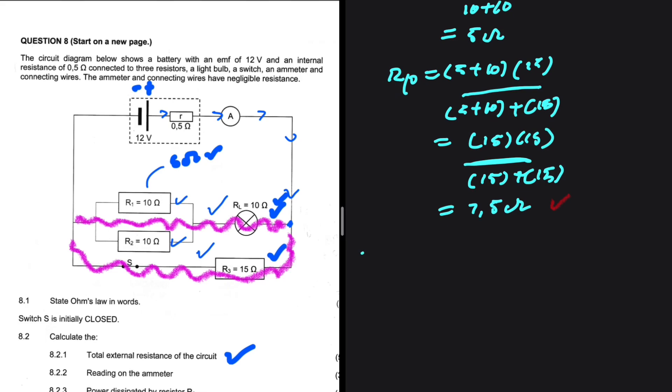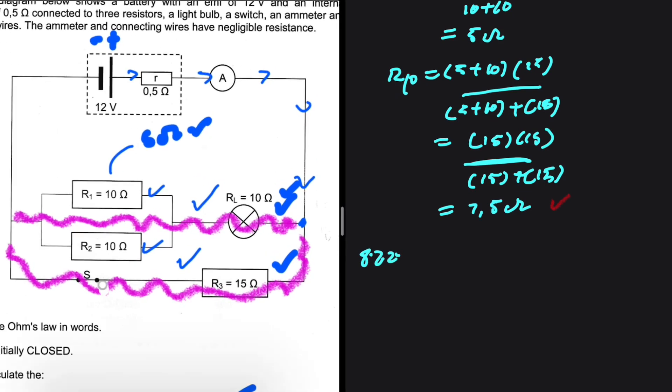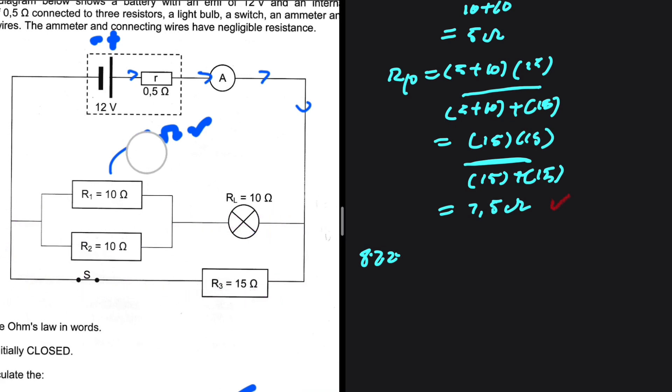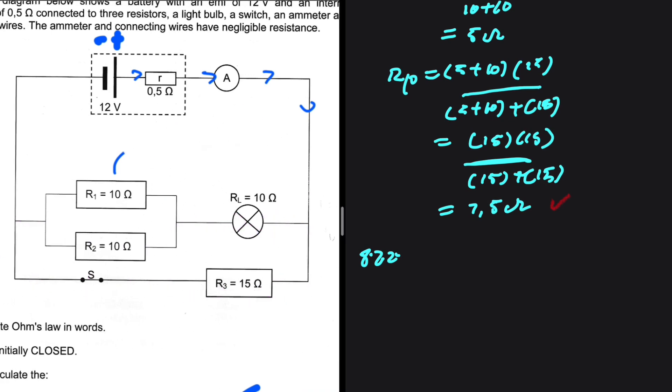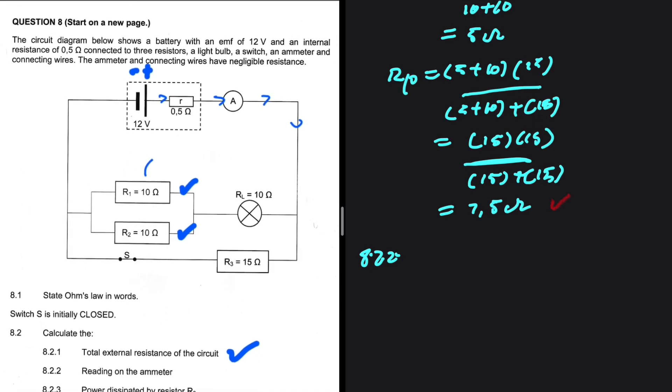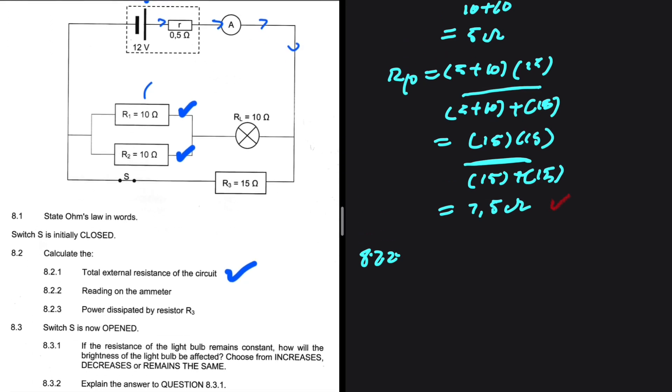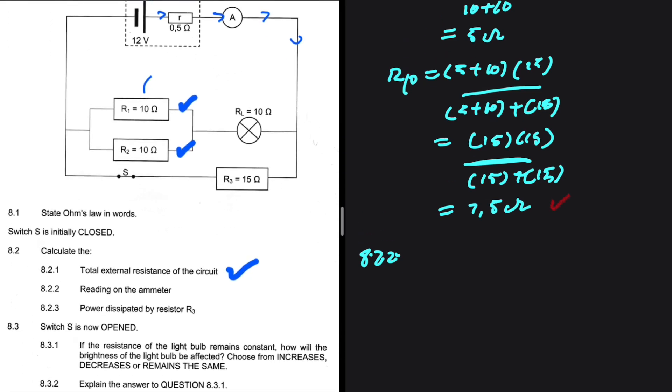Let's move to 8.2.2. This situation where you have parallel on a path that is parallel, it is not so common, but you need to know how to take care of that. You first have to calculate the effective resistance of R1 and R2.